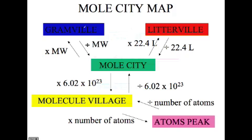To go from Gramsville to Mole City, we would simply divide by the molecular weight or atomic weight of the substance we're given, and our answer would be in moles. If we want to go from moles to Molecule Village, we would simply multiply times 6.02×10²³, which is Avogadro's number, and that gives our answer in molecules. To go from molecules to atoms, we multiply times the number of atoms.